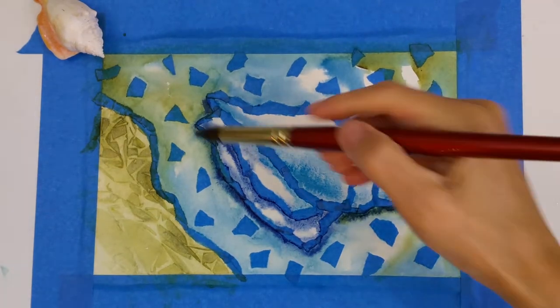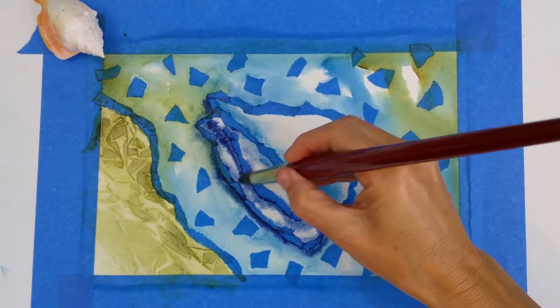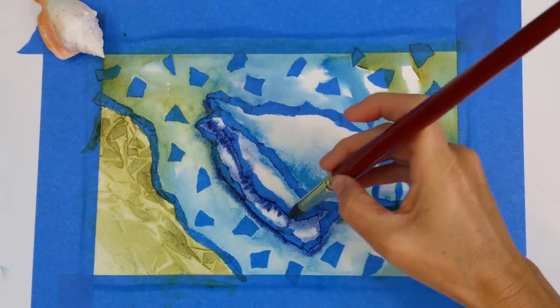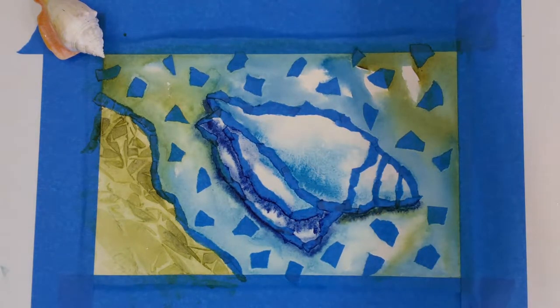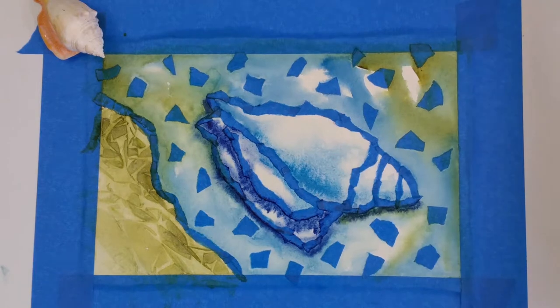Added a little more cerulean in there to tie it all together. And now I'm just getting a little bit of that line in there that you see in the shell. And still putting that wet in wet so it's not a hard line.